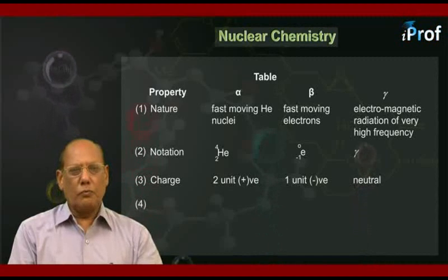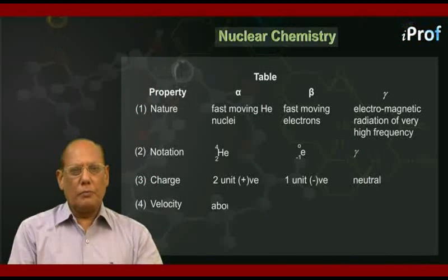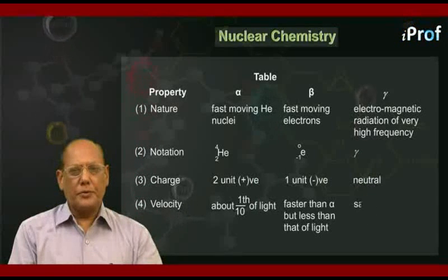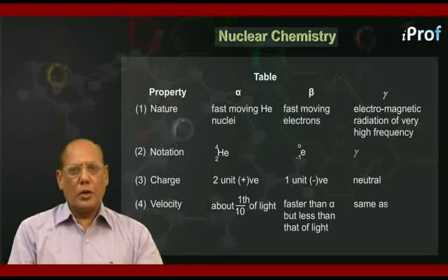Fourth, velocity. Alpha particles travel with a velocity about one-tenth of light. Beta particles move faster than alpha but less than that of light. Gamma radiations travel as fast as light.